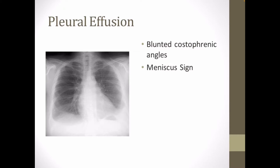Hydrothorax and pleural effusion are abnormal accumulation of fluid within the pleural space. They may result from a variety of pathological processes which overwhelm the pleura's ability to reabsorb fluid. Pleural effusion is commonly used as a catch-all term to describe any abnormal accumulation of fluid in the pleural cavity. The lack of specificity is mainly due to the limitation of the imaging modality.